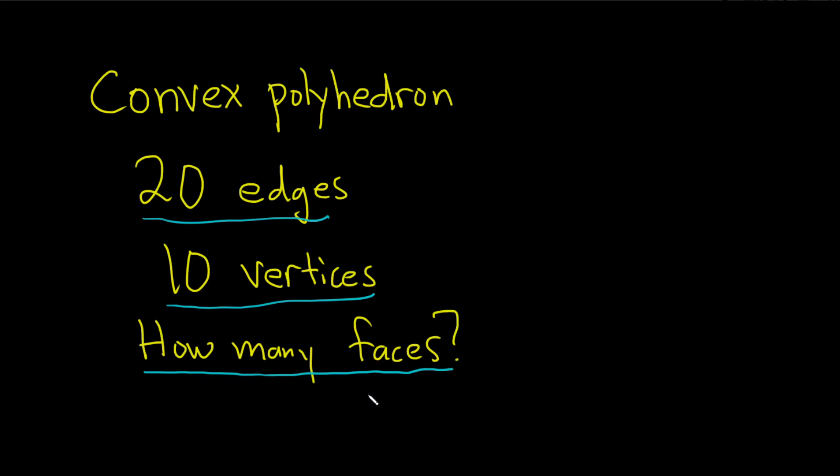To do this problem we're going to use Euler's formula for convex polyhedra, which says that V, which is the vertices, minus E, which is the edges, plus F, which is the number of faces, is equal to 2. So we basically have to find F and we're given V and E.